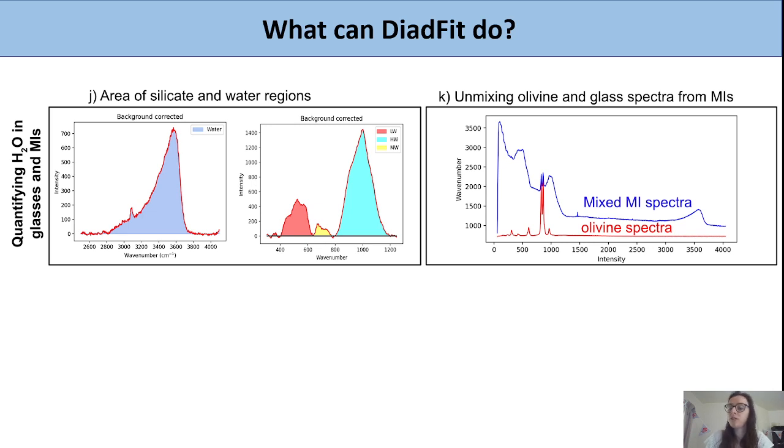A new thing it can do: you can collect spectra on melt inclusions at a certain depth in the crystal. Obviously that Raman spectra is currently a mix of the overlying olivine and the glass. If you can take an olivine spectra right next to the melt inclusion, you can actually unmix those signals. That allows you to get a pure melt inclusion spectra on an unexposed melt inclusion.